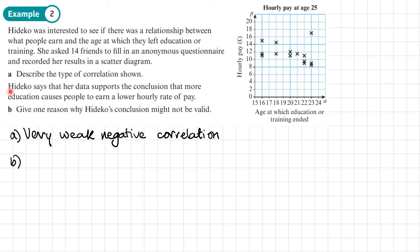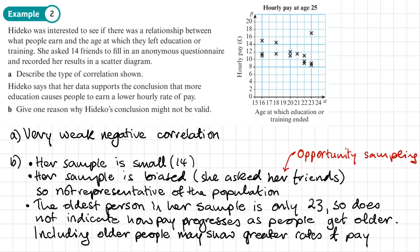Part B. Hideko says that her data supports the conclusion that more education causes people to earn a lower hourly rate of pay. Part B, give one reason why Hideko's conclusion might not be valid. Well, I've given three different reasons and we'd probably choose one of these. So first of all, her sample is small. She only asks 14 people.